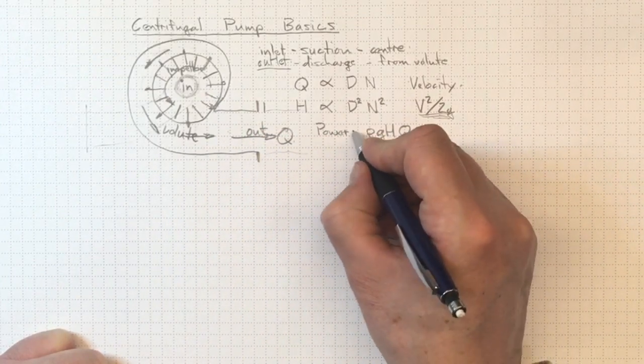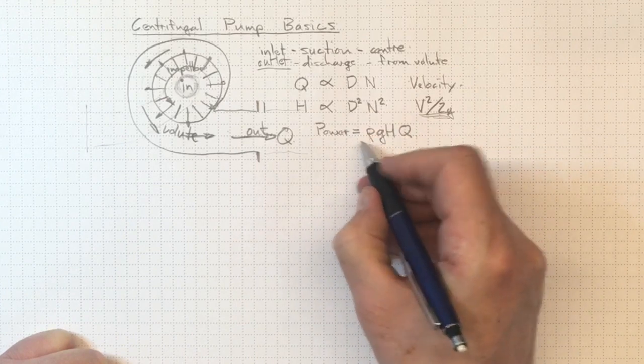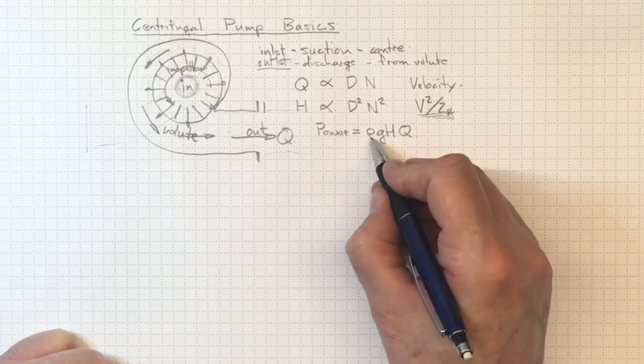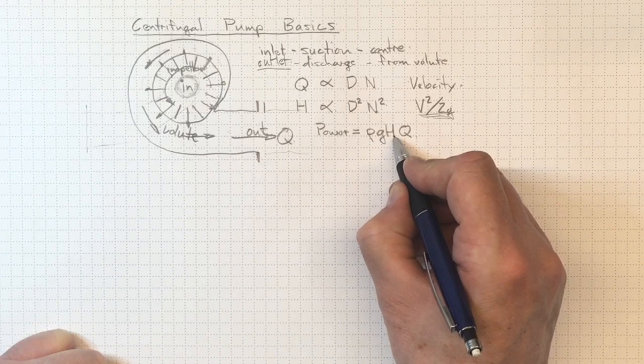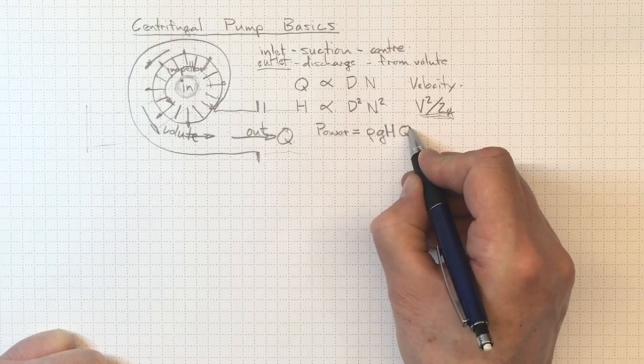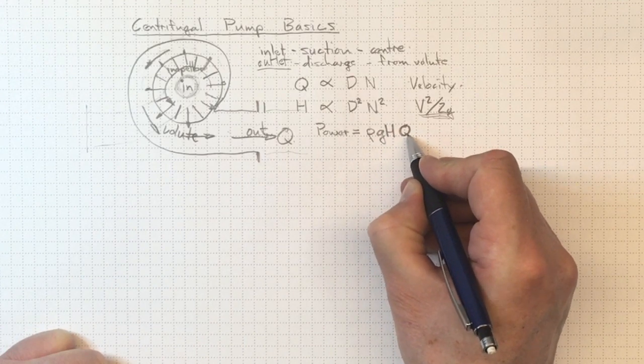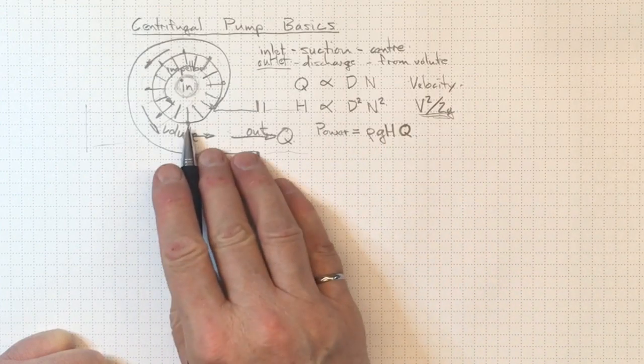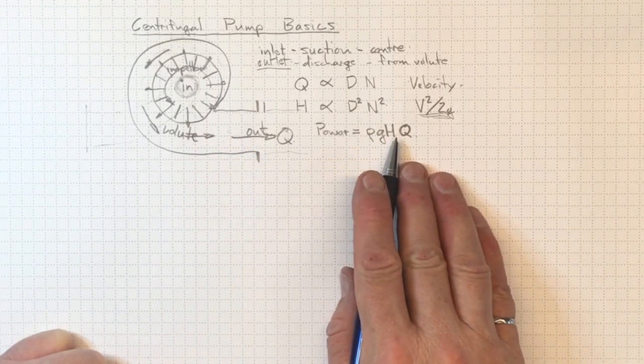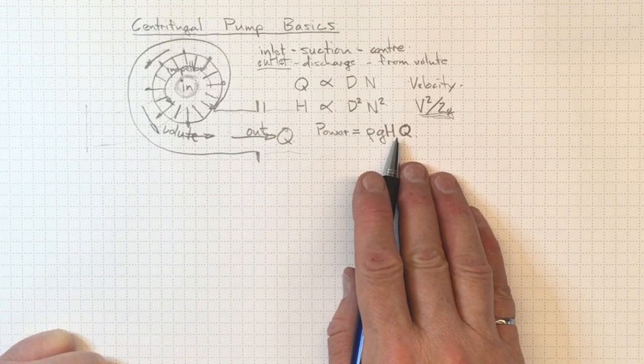So we see a PV work term, and the power taken to drive the fluid out of the pump depends on density, gravity, the head rise across the pump, and the flow rate through the pump. So those are the conditions that we'll see with just about any centrifugal pump.